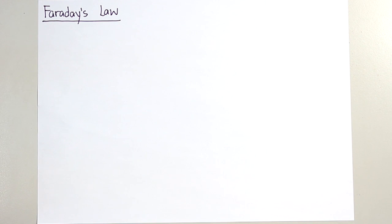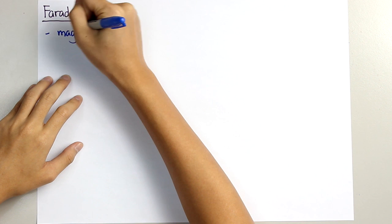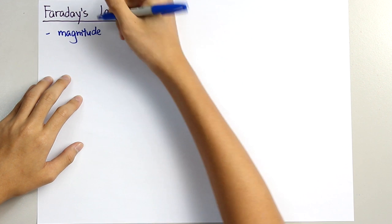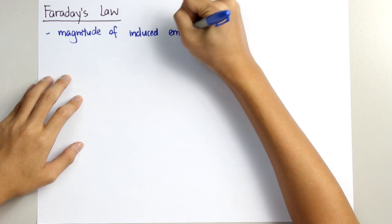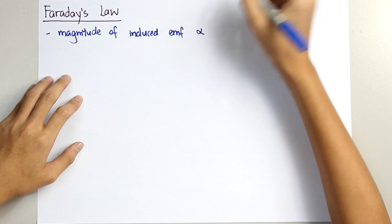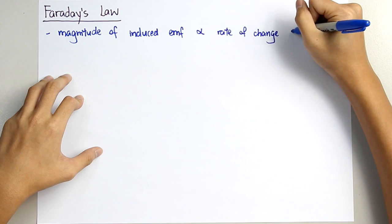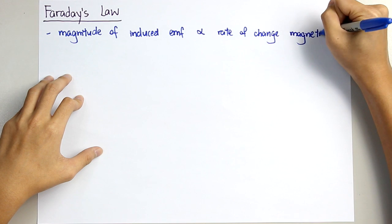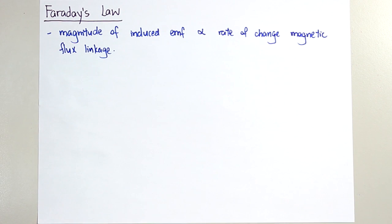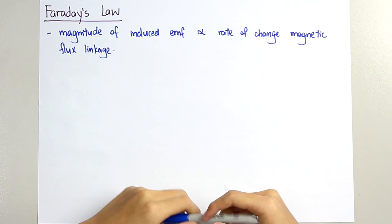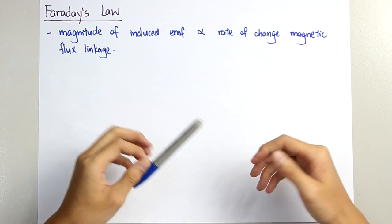Faraday's law states that the magnitude of the induced electromotive force, which we commonly know as EMF, is directly proportional to the rate of change of magnetic flux linkage. This means that the greater the rate of change of magnetic flux linkage, the greater the magnitude of the induced EMF.